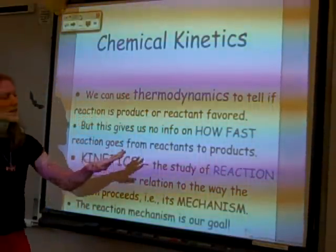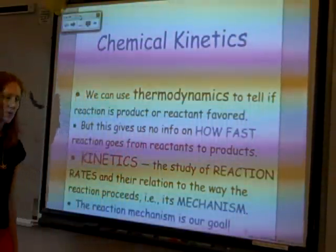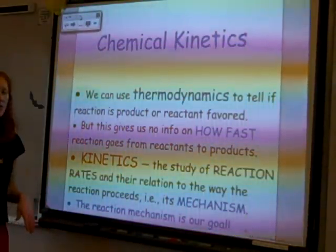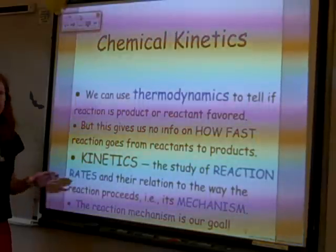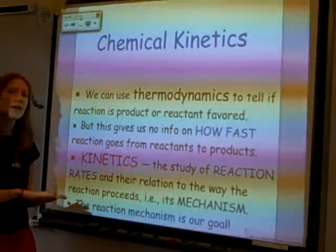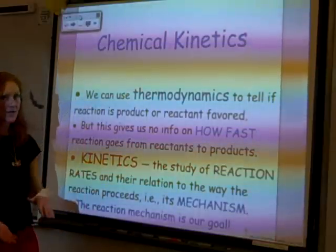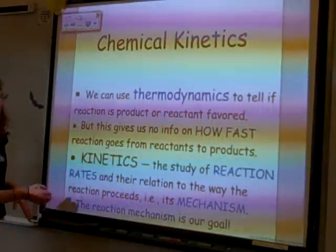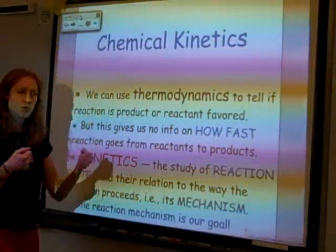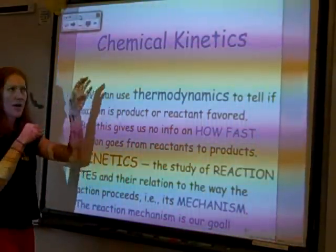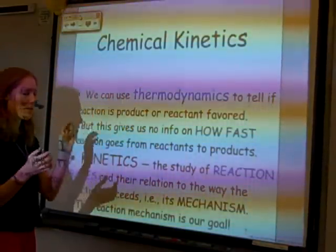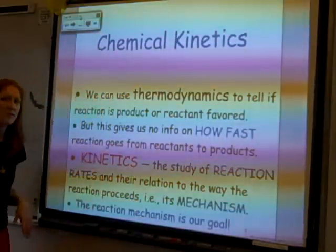But thermodynamics didn't tell us anything about how fast something was going to happen. It just said that eventually, at some point in time, at some rate, this reaction will occur. Kinetics is going to tell us how fast a reaction is going to occur, and it'll also tell us how the reactants are involved — if reactants appear multiple times, and in which order reactants will collide. It'll actually give us the steps — it'll tell us the mechanism.